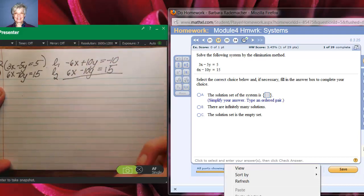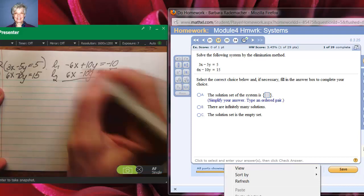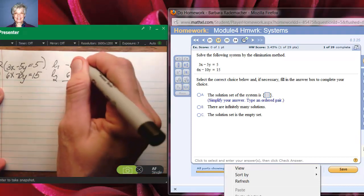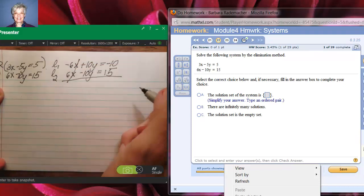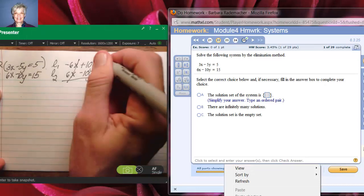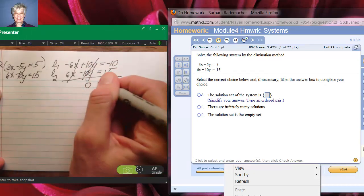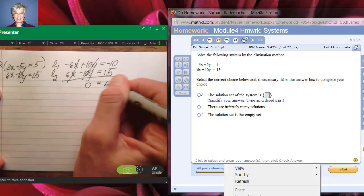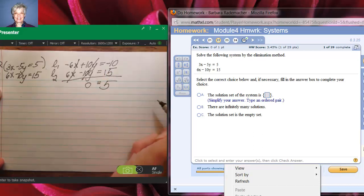Now all I have to do is add the two lines together and my x's zero out. But so do my y's. I'm left with 0 on the left and 5 on the right. All the letters are gone.